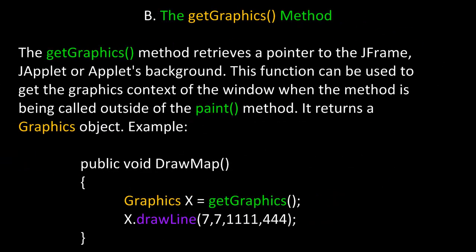Let's extrapolate things a bit further with the getGraphics method. The getGraphics method retrieves a pointer to the JFrame, JApplet, or Applet's background. This function can be used to get the graphics context of the window when the method is being called outside of the paint method. It returns a graphics object. For example, say we have a function called drawMap and outside of the paint method we need to draw something on the JFrame or JApplet's background. We call getGraphics, which returns a graphics object stored in a graphics object called x. We can then take that instance and call all graphics functions on it, such as drawLine.